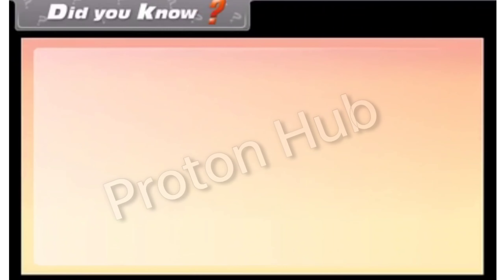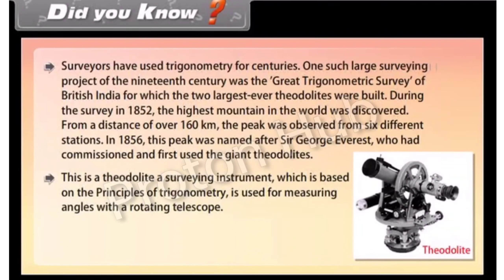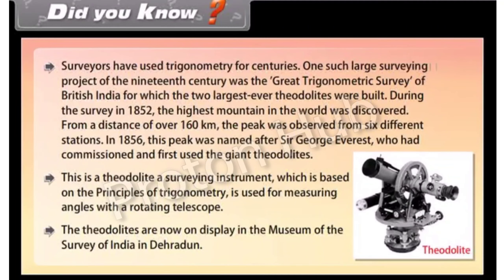Did you know? Surveyors have used trigonometry for centuries. One such large surveying project of the 19th century was the Great Trigonometric Survey of British India, for which the two largest Theodolites were built. During the survey in 1852, the highest mountain in the world was discovered. From a distance of over 160 kilometers, the peak was observed from six different stations. In 1856, this peak was named after Sir George Everest, who had commissioned and first used the giant Theodolites. A Theodolite is a surveying instrument based on the principle of trigonometry, used for measuring angles with a rotating telescope. The Theodolites are now on display in the museum of the Survey of India in Dehradun.